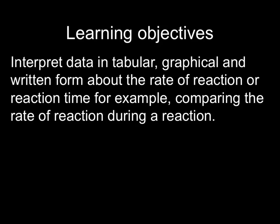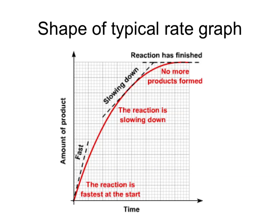You need to be able to interpret data in graphs or in tables to find out whether one reaction is faster than another. You'll be expected to interpret graphs such as this one. You can see that the reaction here is fast at the beginning because the gradient is at the steepest. The reaction slows down as time goes on because the concentration of one or other of the reactants is being reduced until eventually the reaction finishes. No more products are formed because one or both of the reactants has been used up.